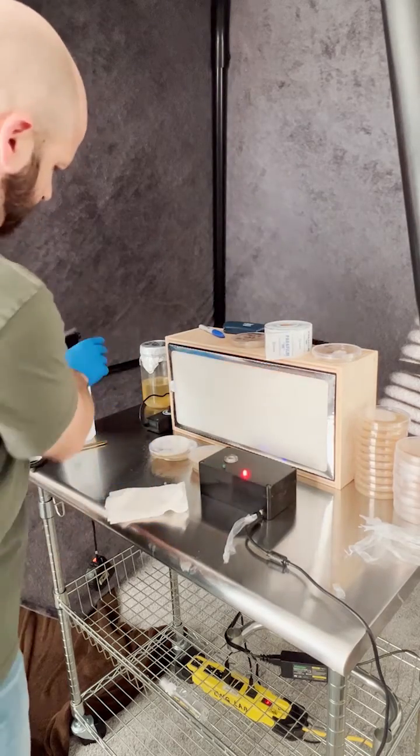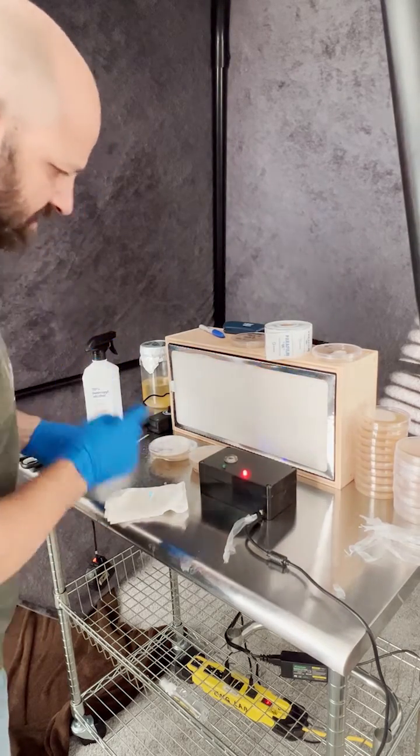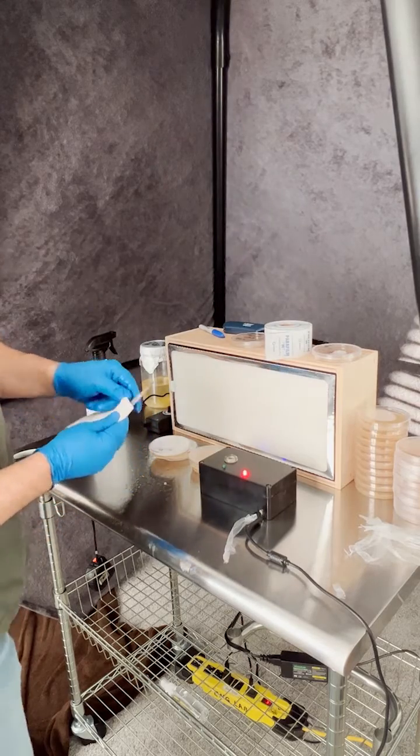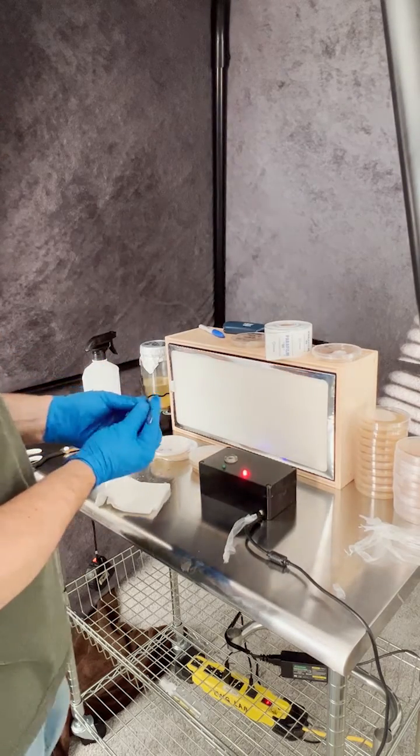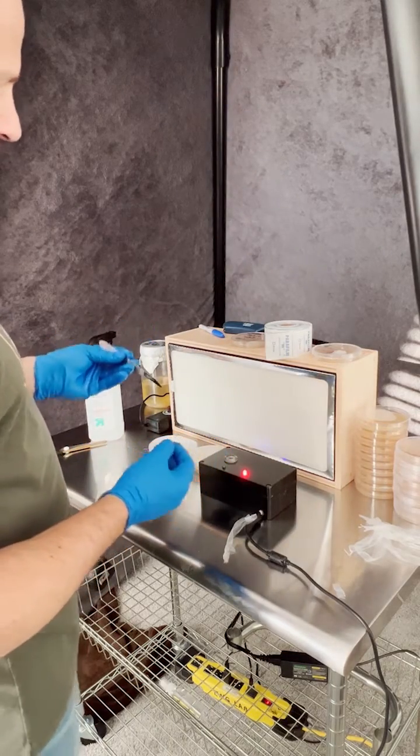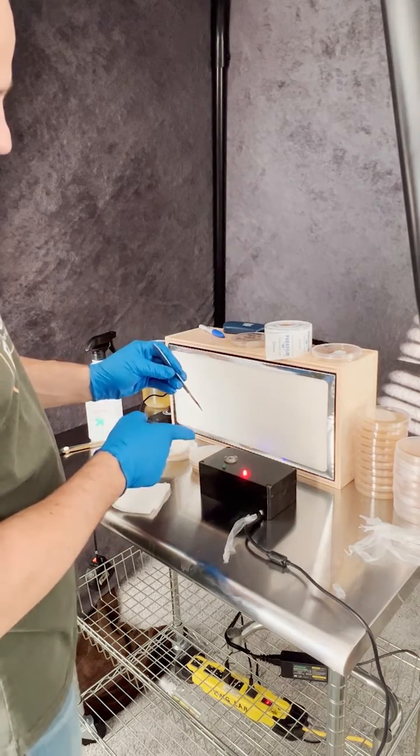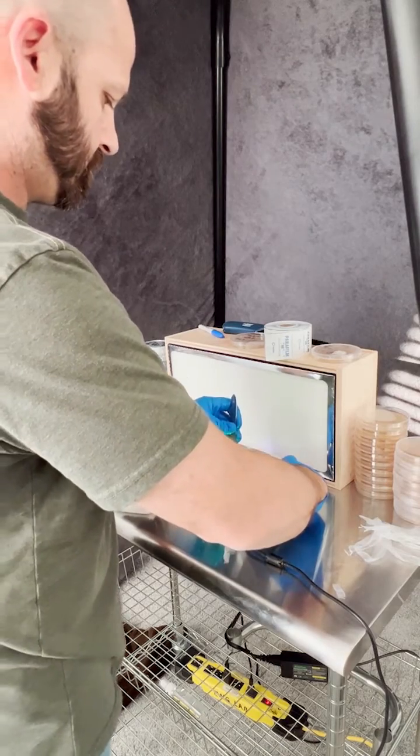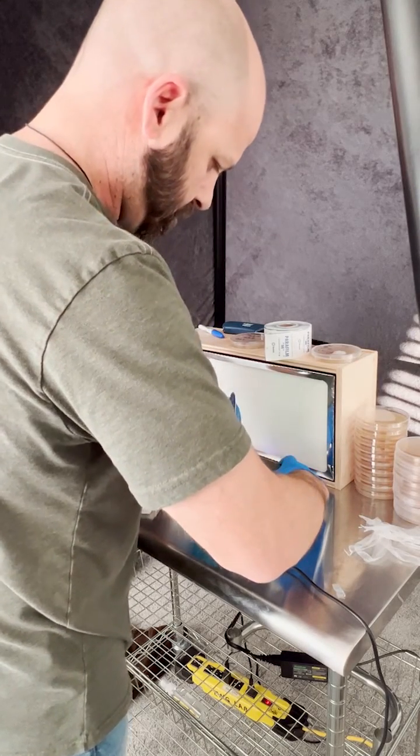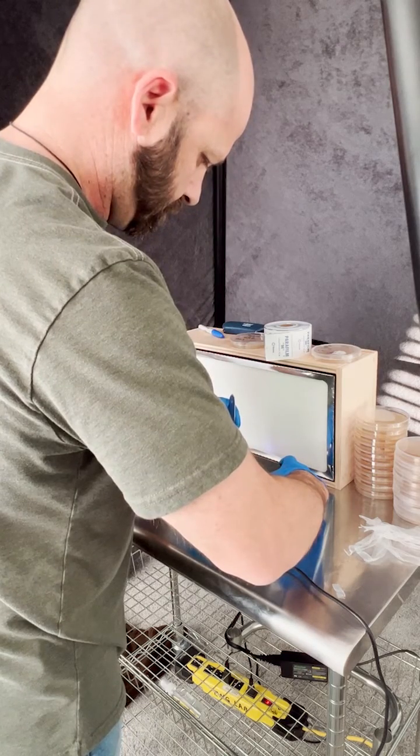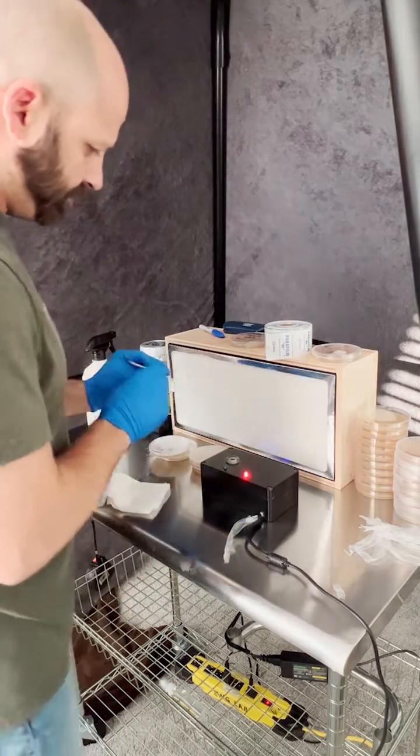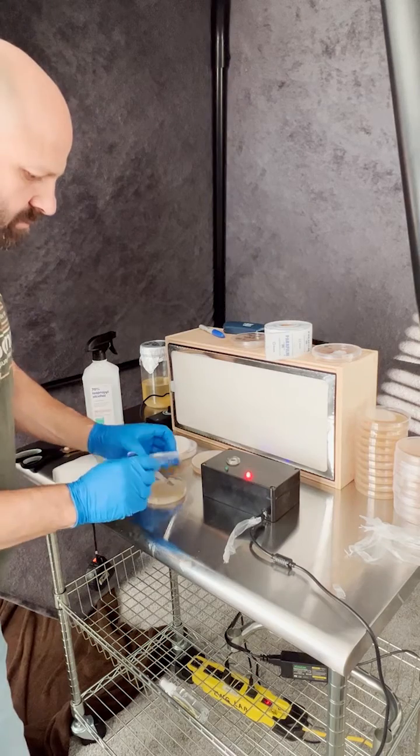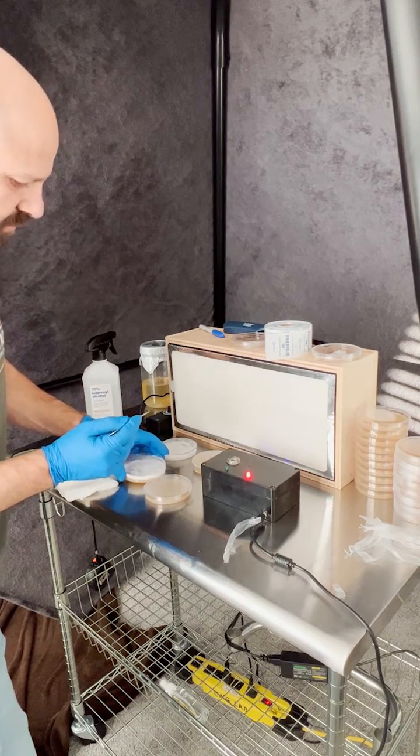When I'm working with my scalpel and dropping it into the induction sterilizer, that thing gets up to 3,000 degrees really fast. So I'll try not to have standing alcohol in there. I don't want anything to catch on fire. No matter what I do, even if I spray that with alcohol, I always try to sterilize the tip of the scalpel with my induction sterilizer. It's nice and hot. I'll take my plate, drop that into the plate first, then I'll open the one that I'm working with.